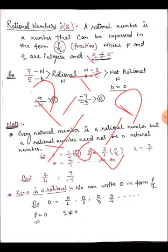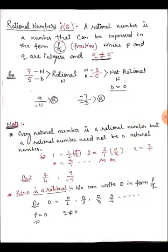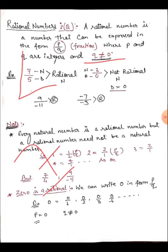If you can write any number in the form p upon q, where p and q are both integers and q is not equal to zero, then that number is called a rational number. For example, seven upon five is a rational number. And seven by itself is also a rational number because we can write it as seven upon one.